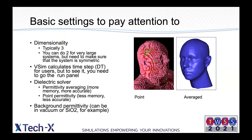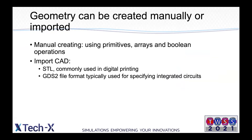Geometry in this simulation can be created either by hand in the setup using primitives provided by the vSIM GUI, or imported as a CAD file. You can manipulate primitives by creating one, two, or three-dimensional arrays. You can also apply Boolean operations such as intersections, unions, and subtractions.